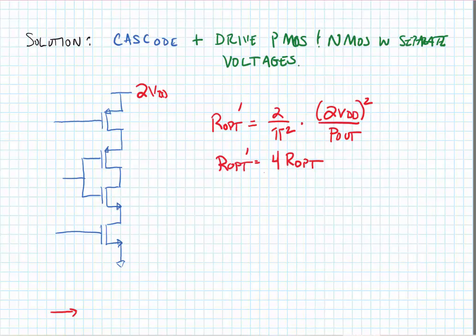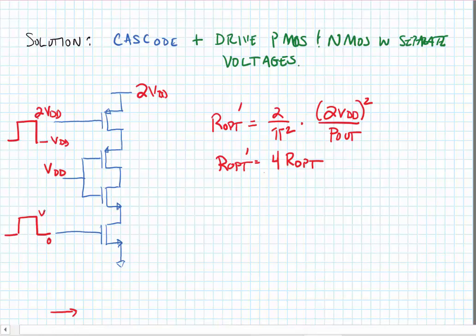In order to make sure that none of the transistors are overstressed, we're going to set the internal transistors to VDD. And we're going to switch the PMOS between VDD and 2 VDD, and we're going to switch the NMOS between 0 and VDD. We can do this with a level shifter or by DC biasing the transistors and capacitively coupling them.